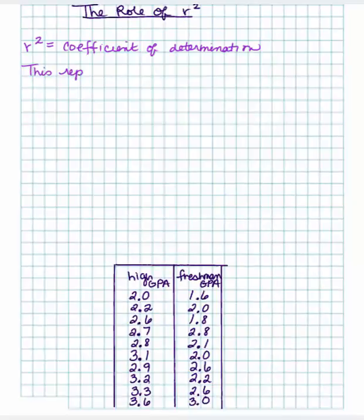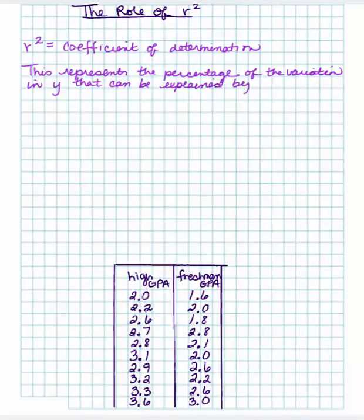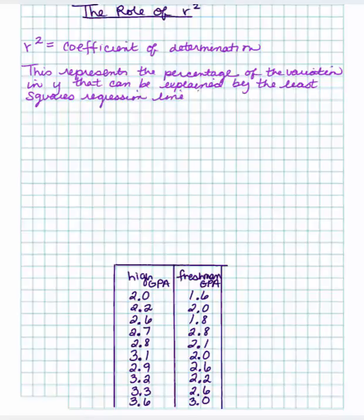What this represents is the percentage of the variation in y that can be explained by the least squares regression line, or LSRL. I just think it's cheesy to keep abbreviating it.